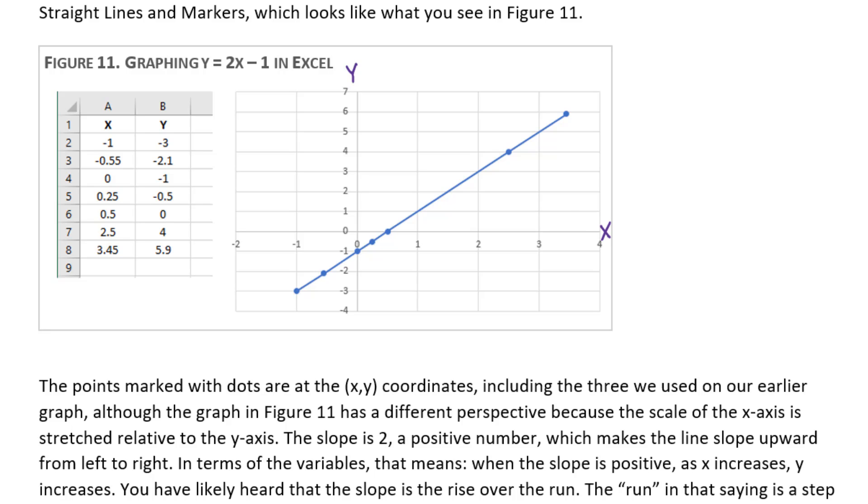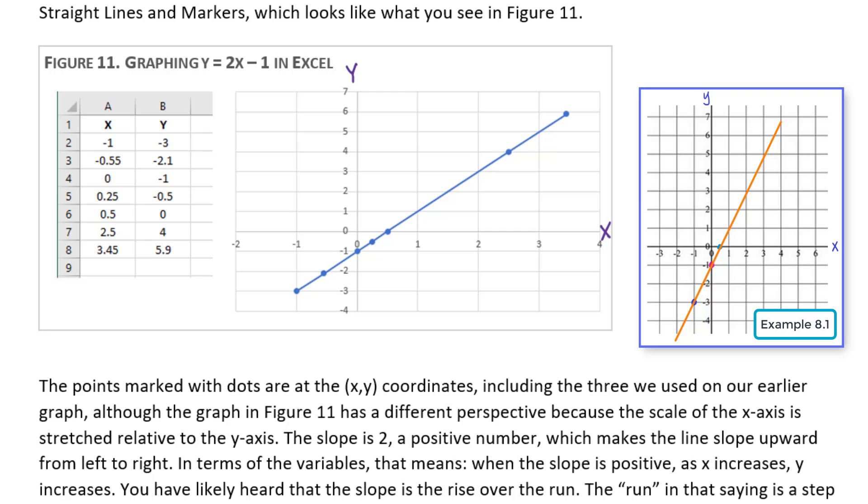The points marked with dots on this graph are at the x-y coordinates that we calculated out in Example 7.1, including the three points that we used on our earlier graph in Example 8.1. We graphed the point negative 1 comma negative 3, the point 0 comma negative 1 (the y-intercept), and the point 0.5 comma 0 (which is the x-intercept).